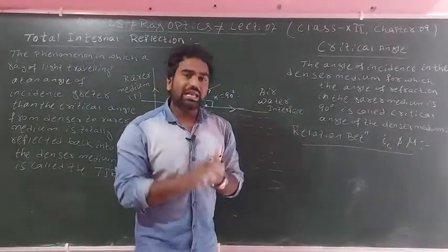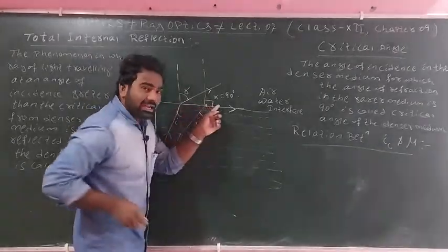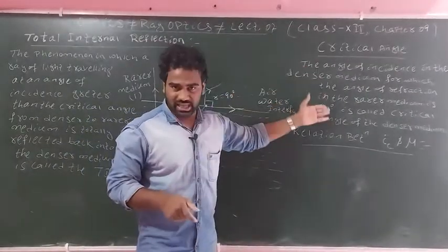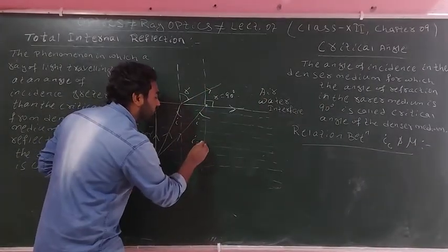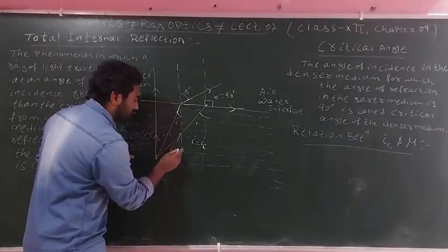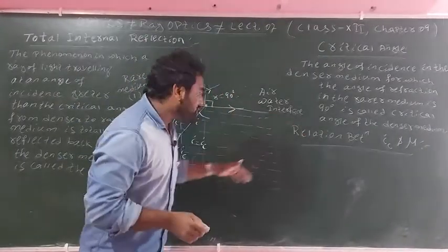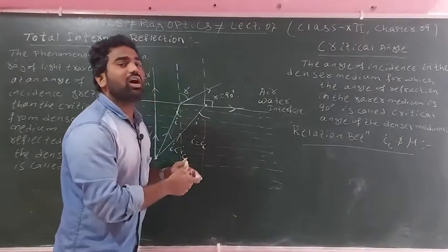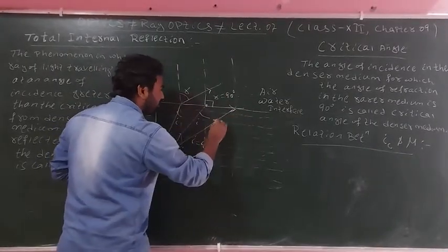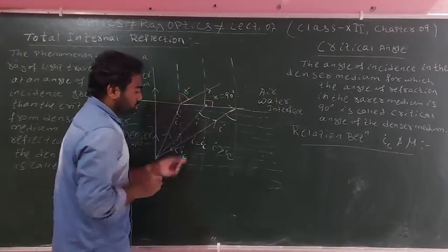The critical angle is denoted by the symbol Ic. If the angle of incidence is less than the critical angle, the refracted ray exists. If the angle of incidence equals the critical angle, the angle of refraction is 90 degrees. If the angle of incidence is greater than the critical angle, total internal reflection occurs.